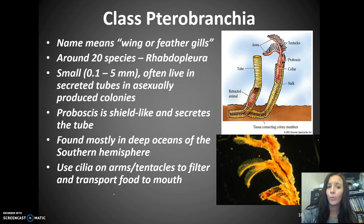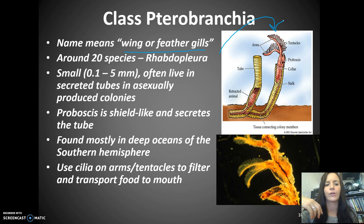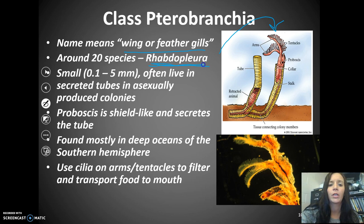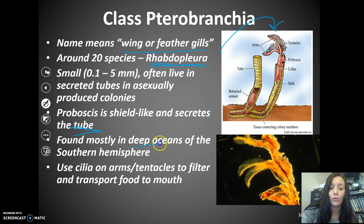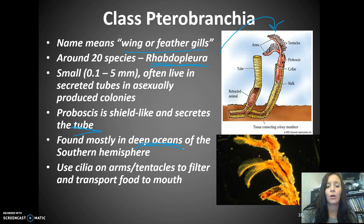The next class is Pterobranchia — the name means wing or feather gills, and you can see why from the image. There are around 20 species, and the most commonly known is the Rhabdopleura. They are small and often live in tubes in asexually produced colonies. They have a proboscis that is more shield-like and secretes from the tube. Found mostly in the deep oceans — typically the southern hemisphere — they use cilia on their arms and tentacles to filter and transport food into their mouth.